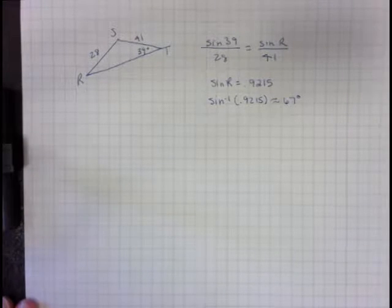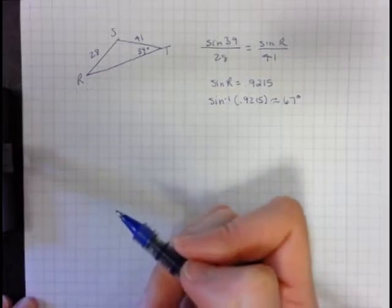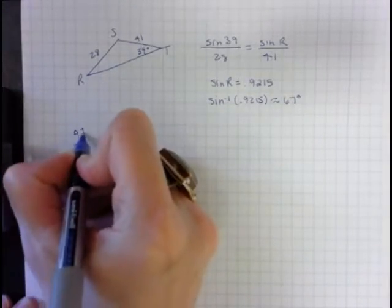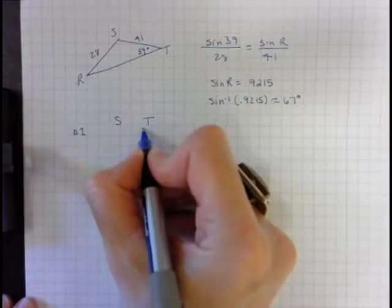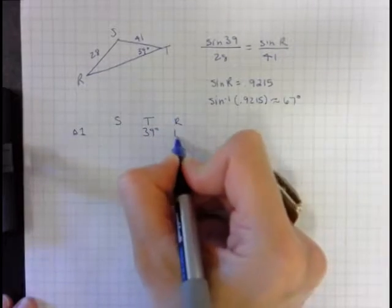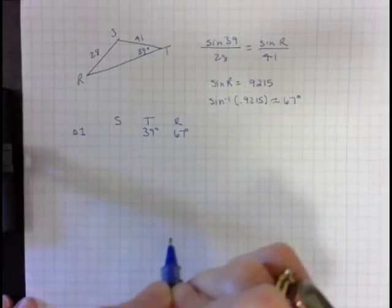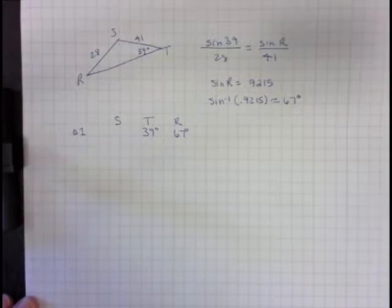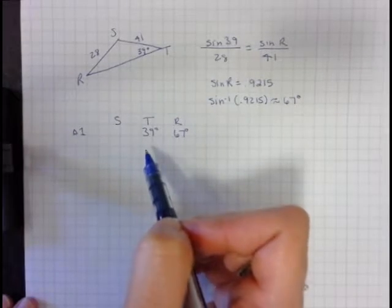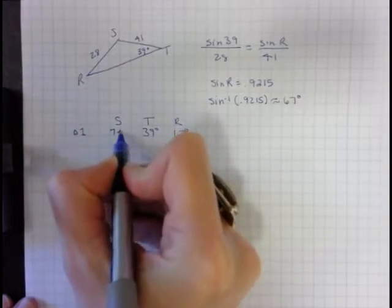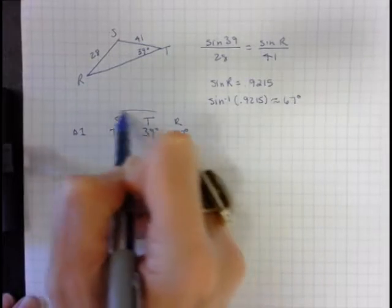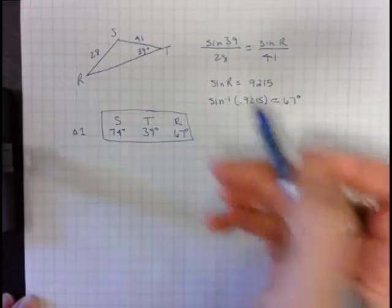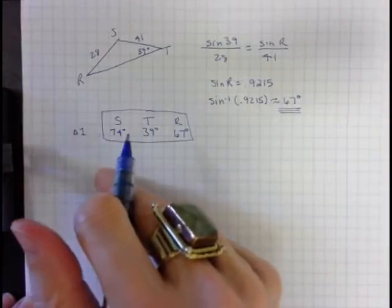So again, I'm going to go through and write in my scenarios. Triangle number one: S we don't know it yet, T is 39 degrees, and r we just figured out is 67 degrees. So what's S? S is going to be 74 degrees. Let's make sure: 74 plus 39 plus 67 should equal 180, and it does.